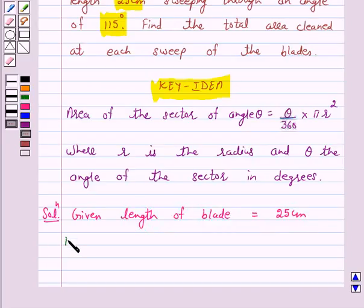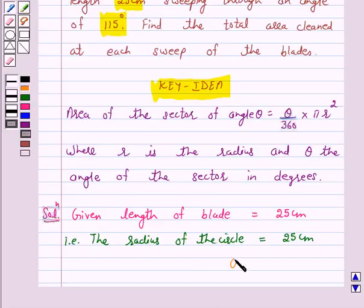That is the radius of this circle is equal to 25 cm. It is also given that each blade is sweeping through an angle of 115 degree. That is theta is equal to 115 degree.